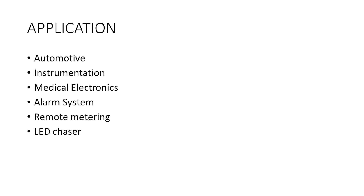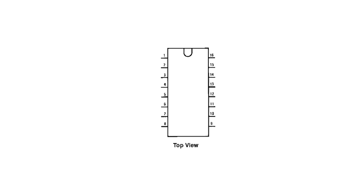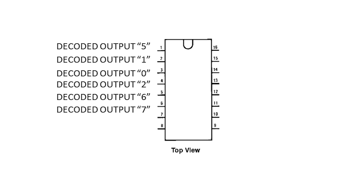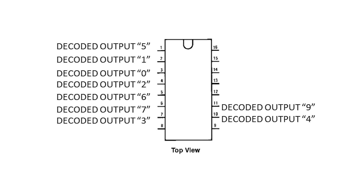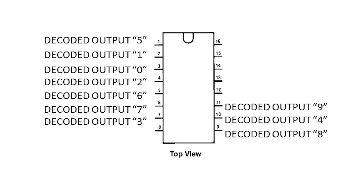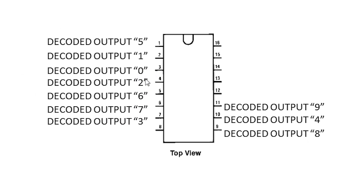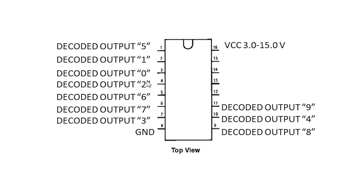For using this IC, you need to know its pins. This IC has 10 outputs. As you see in this picture, the order is not the same, so you need to refer to the datasheet to know which pin is related to which number. For example, pin three is related to output number zero. Then we have the ground, and also the VCC, which is three volts to 15 volts.